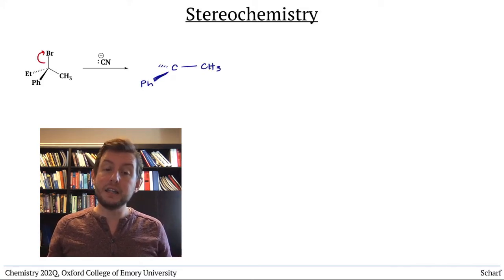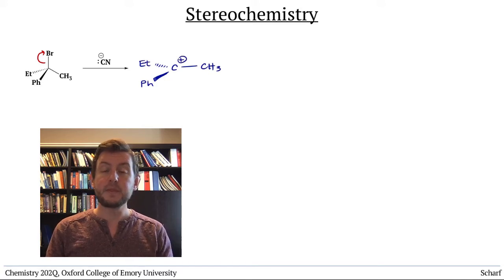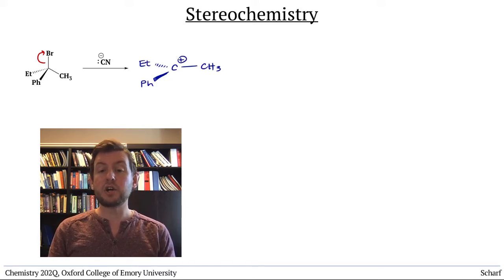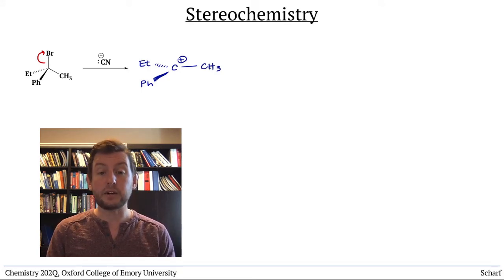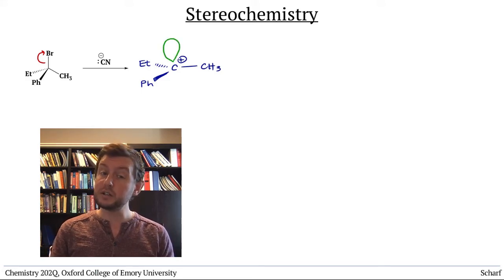Because the positively charged carbon atom has just three electron groups, it is trigonal planar, SP2 hybridized, and its LUMO is an empty P orbital, which looks like this.